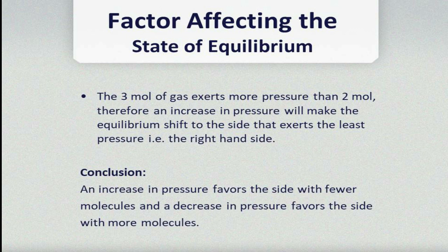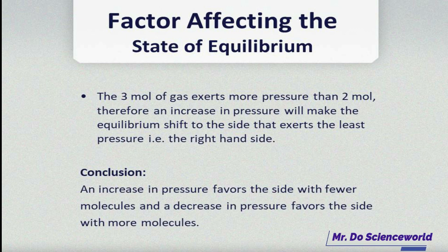Three moles of gas applies more pressure than two moles. Therefore, an increase in pressure will make the equilibrium shift to the side that applies less pressure — that is the right-hand side. The right-hand side has two moles, so when we increase the pressure we expect the equilibrium to shift to the right-hand side, which has the fewer number of moles. In conclusion: an increase in pressure favors the side with fewer moles, and a decrease in pressure favors the side with more moles.